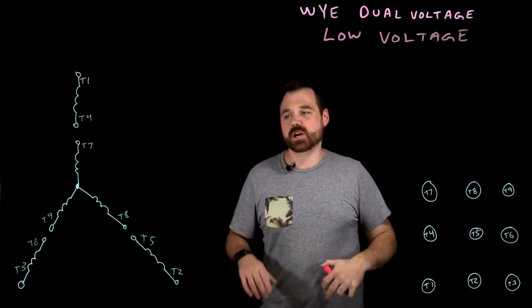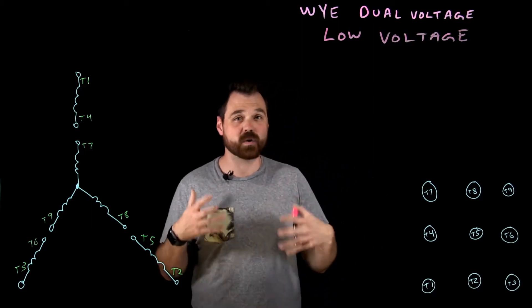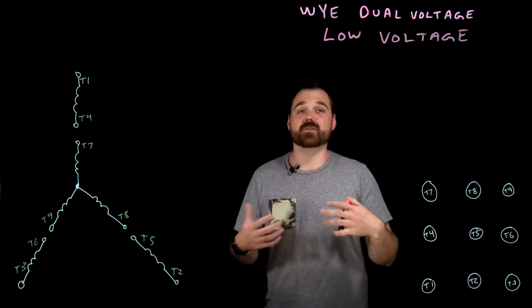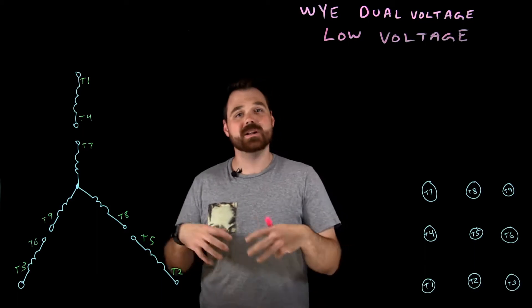These motors come as nine-lead dual voltage motors, which are good for two voltages: either a high voltage or a low voltage.